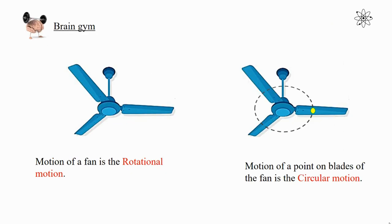A brain exercise for you students: on a similar line, explain why the motion of a fan is an example of rotational motion, but the motion of a point on the blades of the fan is an example of circular motion. Answer in the comment box. Thank you.